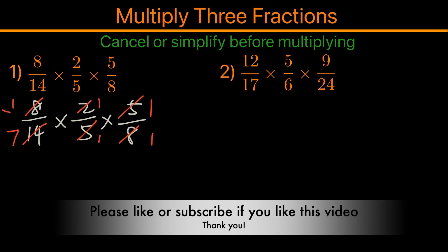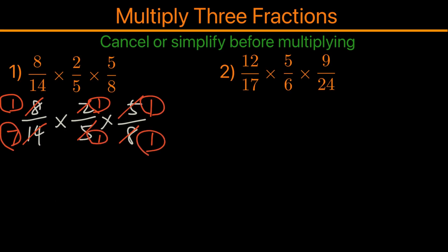All you have to do is take 1 times 1 times 1 and then 7 times 1 times 1, and that will become 1 on top and then 7 on the bottom. So the answer is 1 over 7.